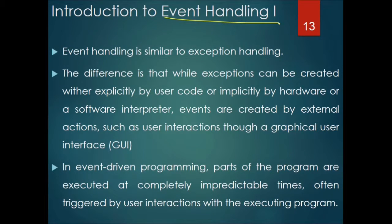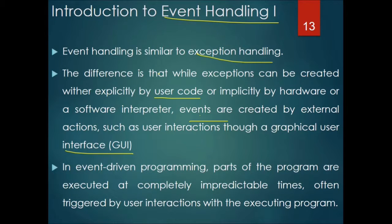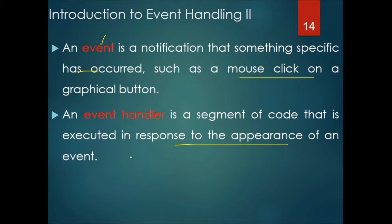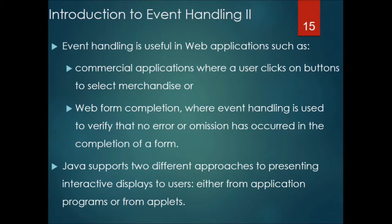Event handling is similar to exception handling, but there is a key difference: while exceptions can be created explicitly by user code or implicitly by hardware or software, events are created by external actions such as user interaction through a graphical user interface. In event-driven programming, parts of the program are executed at completely unpredictable times, often triggered by user interaction with the executing program. An event is a notification that something specific has occurred, such as a mouse click on a graphical button, and an event handler is a segment of code executed in response to the appearance of that event.